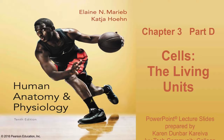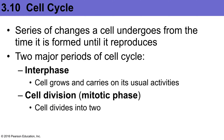We're going to be finishing Chapter 3, the final part, Part D, on the cells. A cell has what's known as a cell cycle. The cell cycle is the series of changes that a cell undergoes from the time it's formed until it reproduces.